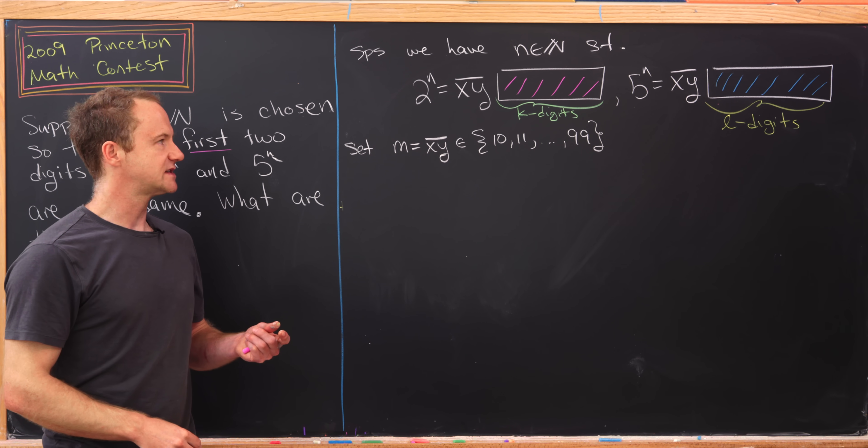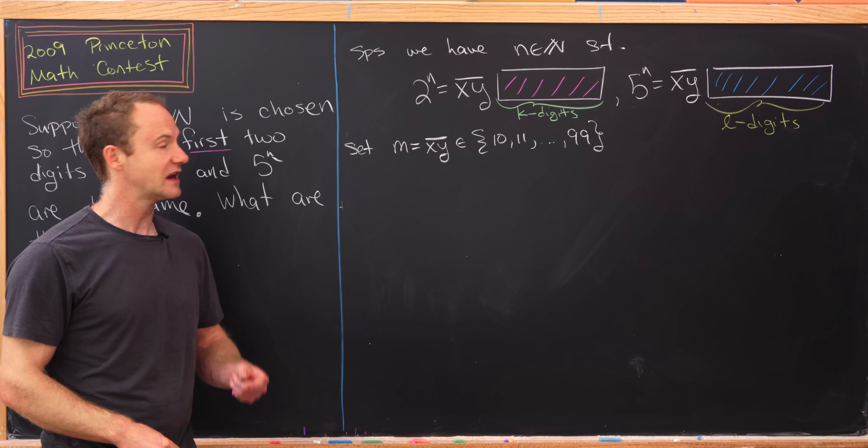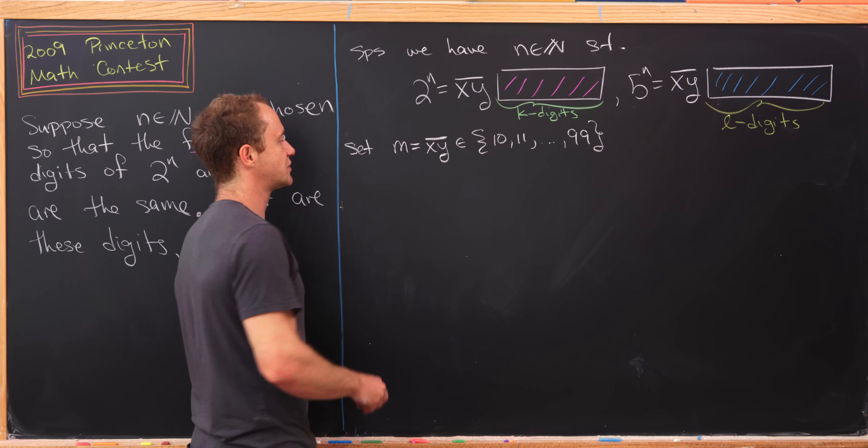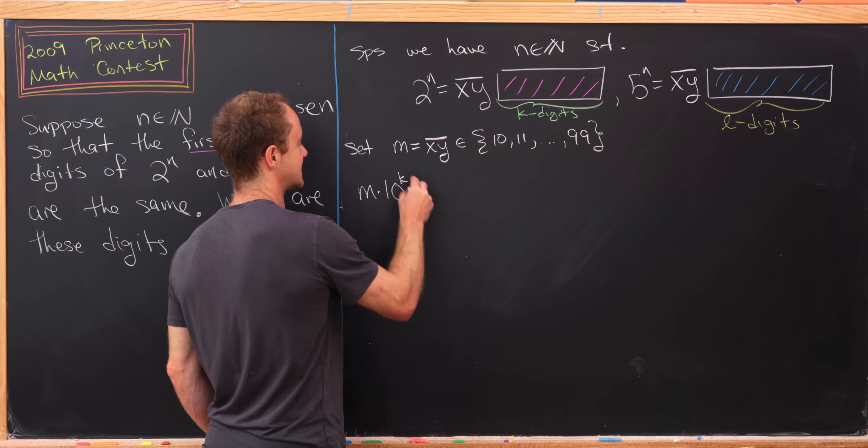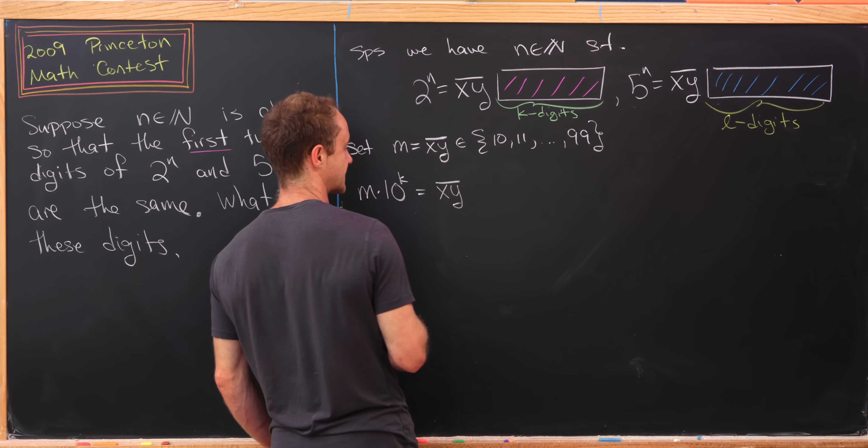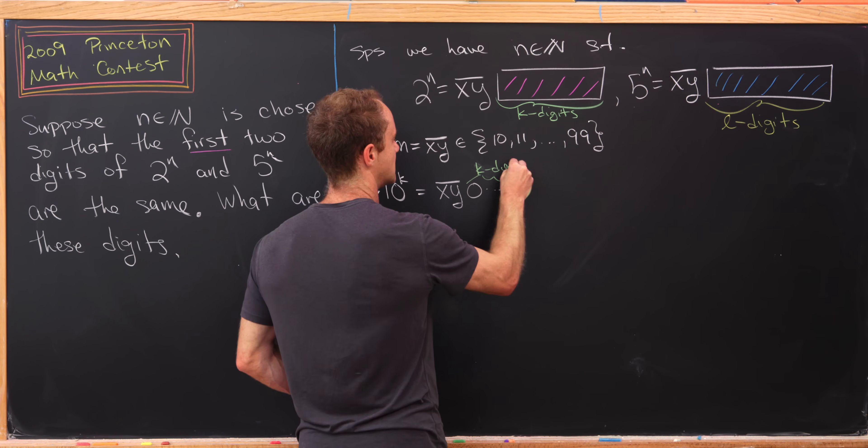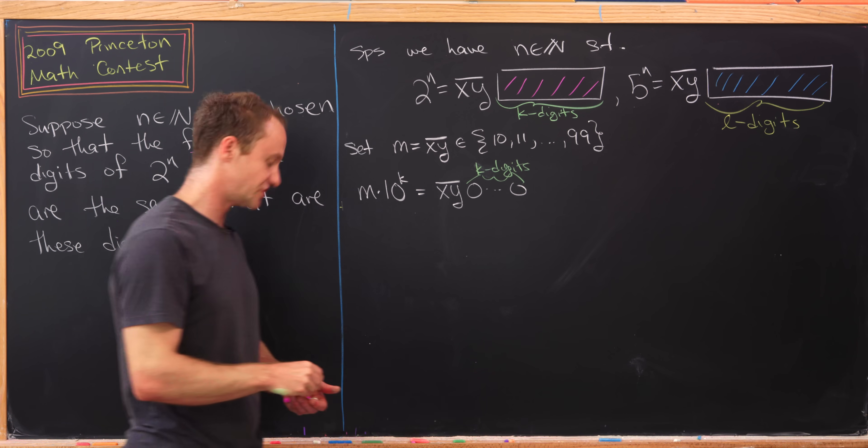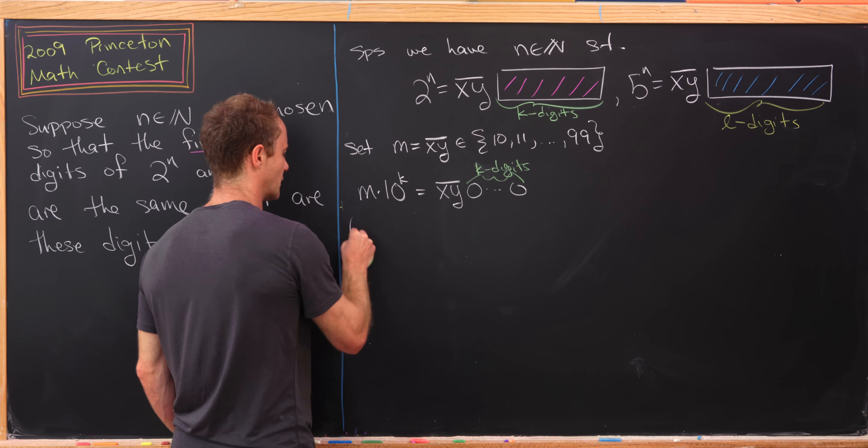Let's see if we can use that to get an inequality into the situation, and in fact we can. Notice that m times 10^k is going to start with our first two digits xy and then end in k zeros. So we've got k digits which are zeros.